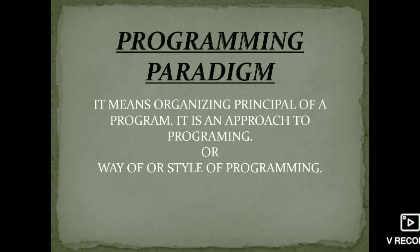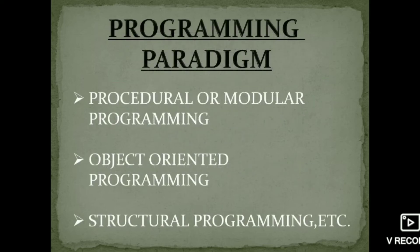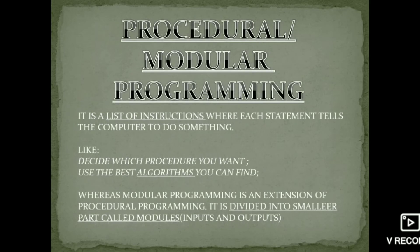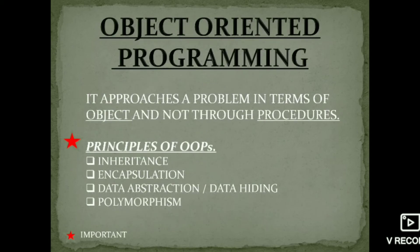Next is programming paradigm — it means the way or style of programming. There are several kinds: procedural programming, modular programming, object-oriented programming, structural programming, and others. Procedural or modular programming is a list of instructions where each statement tells the computer to do something — it basically uses algorithms.